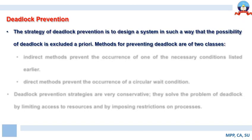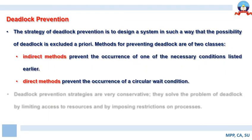Now let us talk about deadlock prevention. The strategy of deadlock prevention is to design a system such that the possibility of deadlock is excluded a priori — prior to the occurrence of deadlock, we detect it and initiate necessary measures to avoid it. Methods for preventing deadlocks are of two types: indirect method and direct method. The indirect method prevents the occurrence of one of the necessary conditions listed earlier.